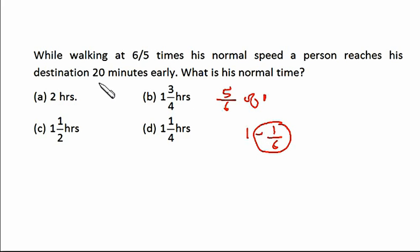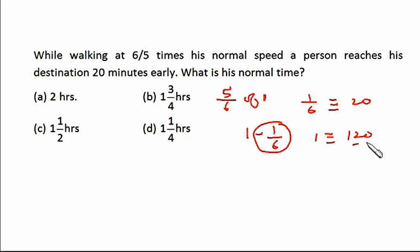Five-sixths of one means he is taking one-sixth less than normal. This one-sixth is 20 minutes — since he's taking one-sixth less than normal and arriving 20 minutes early. So if one-sixth equals 20 minutes, then one equals 120 minutes, which is two hours. His normal time is 120 minutes. If you are conceptually clear about the relationship of speed and time, you can solve these problems mentally.